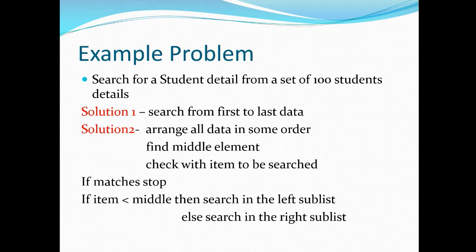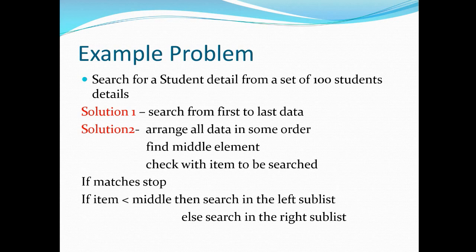We are going to look into two solution approaches. The first solution approach: you start with the first data, check the register number of the first data against the item to be searched, which is 30. If there is a match, you get the detail. If not, you go to the second, third, and likewise check until you find the detail of the student.